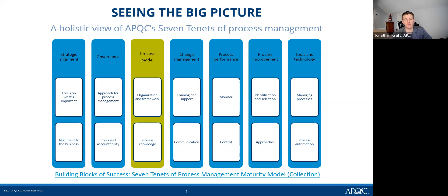When we think about process models within the seven tenets, it really covers a couple of areas. The first one is the idea around what are the process models within a framework or specifically within the organization. The other area is the process knowledge required to support the execution of those processes.